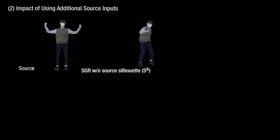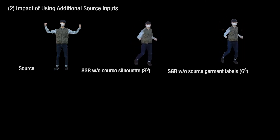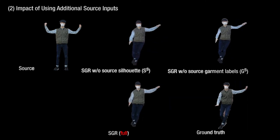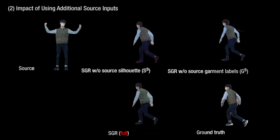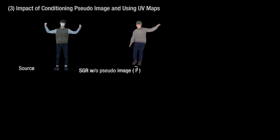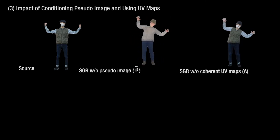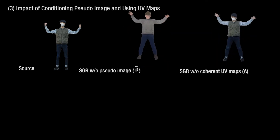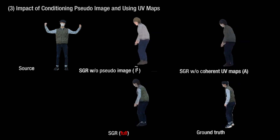Next, we study the effect of using additional source data. We remove the source silhouette and source garment labels from the entire pipeline, where the network is highly confused without source garment labels as input. Third, we study the effect of using the pseudo-images and coherent UV maps. Our network predicts the person image without pseudo-image and without UV maps. We can notice that conditioning on the pseudo-image warped from the coherent UV maps is a key enabling factor for consistent person rendering.